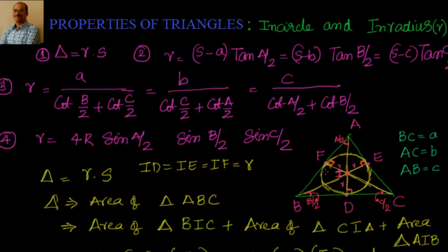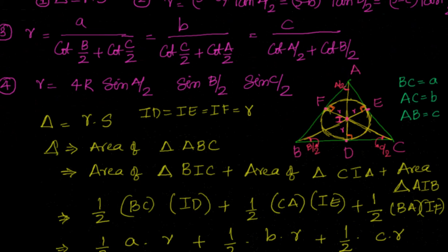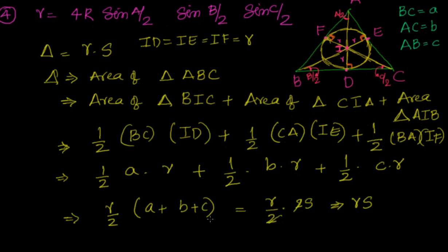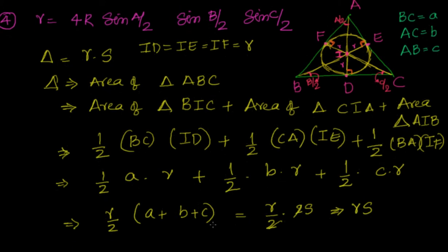To recap: we have seen the definition of incircle and how to get it. To prove delta equal to r·s, triangle ABC is divided into three triangles: BIC, AIC, and AIB. Finding each area is simple using half base times height. The height in each case is r because where the incircle touches the side it is perpendicular. So the bases are a, b, and c, and all heights equal r. Adding them gives half·r·(a+b+c), but a+b+c equals 2s since s is the semiperimeter, so delta equals r·s.